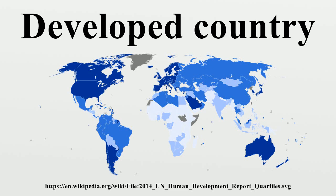Developed countries have post-industrial economies, meaning the service sector provides more wealth than the industrial sector. They are contrasted with developing countries, which are in the process of industrialization, or undeveloped countries, which are pre-industrial and almost entirely agrarian.